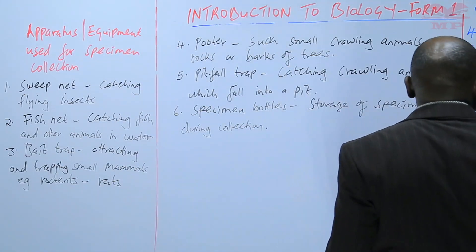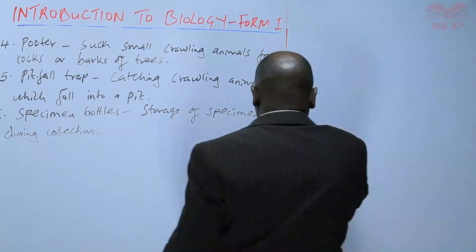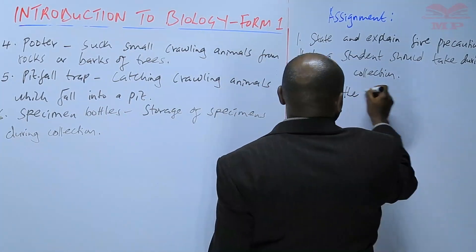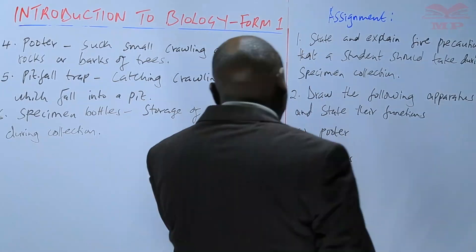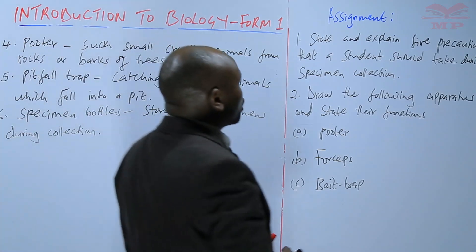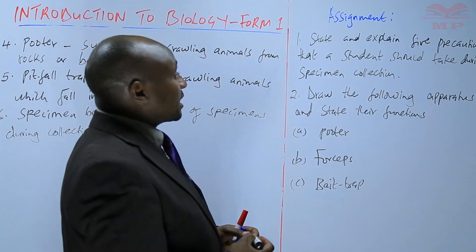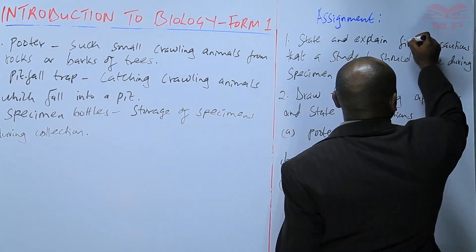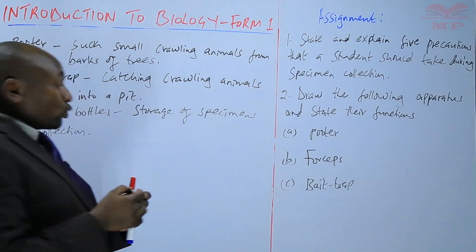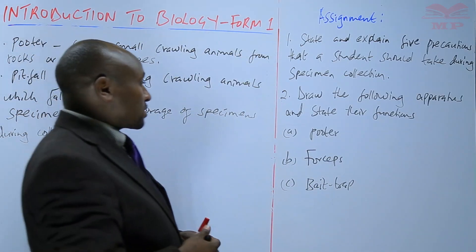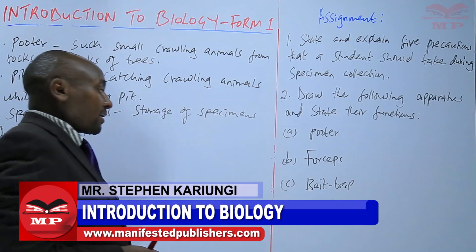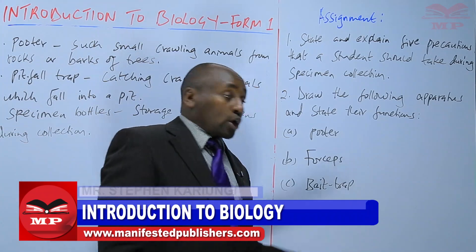We are going to have an assignment on that. Question one: state and explain five precautions that a student should take during specimen collection. Question two: draw the following apparatus and state their functions — a) a pooter, b) forceps, and c) a bait trap. We are going to stop there; see you next time.